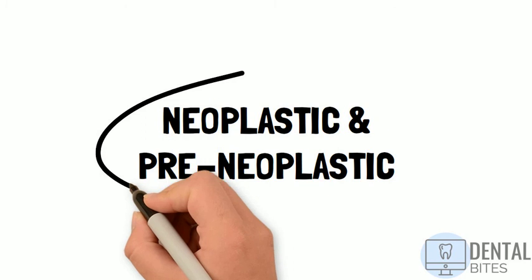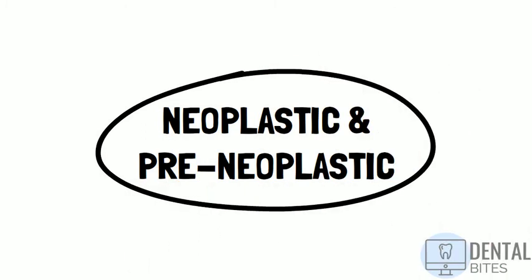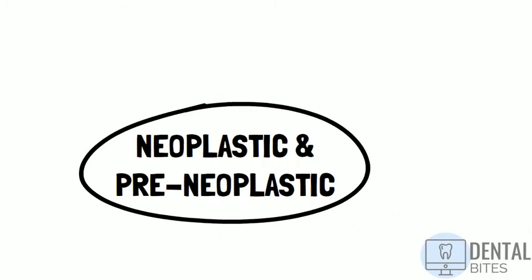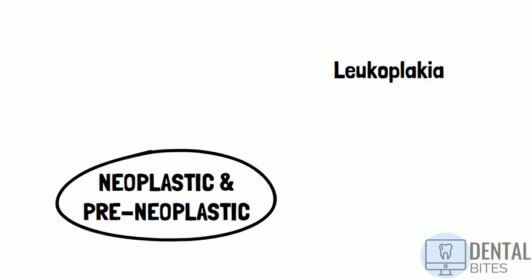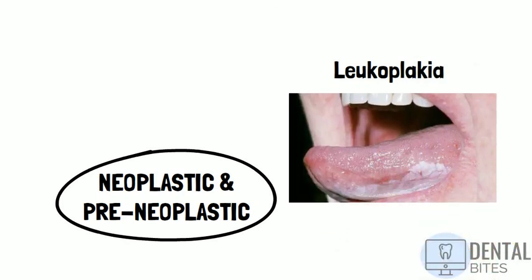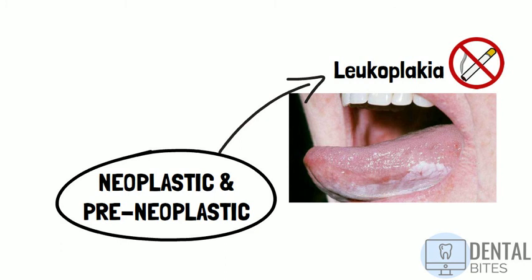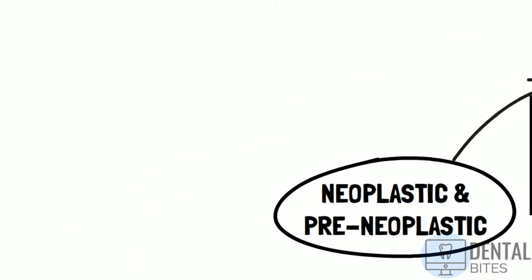The last group are the neoplastic or pre-neoplastic causes for white patches. Leukoplakia is an example — a white patch that cannot be rubbed off and cannot be identified clinically as any specific disease. Most cases are associated with a tobacco habit, and it is a potentially malignant lesion, so it's crucial to biopsy any white patch with an uncertain cause.